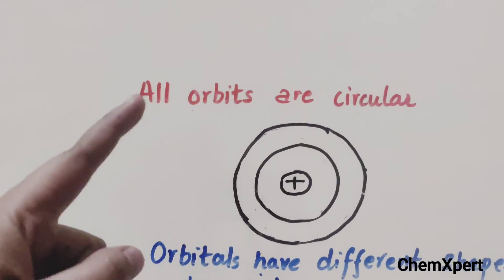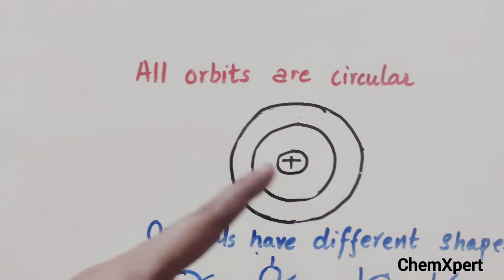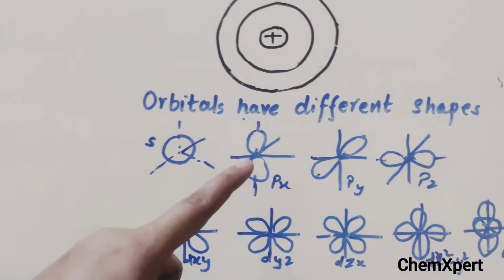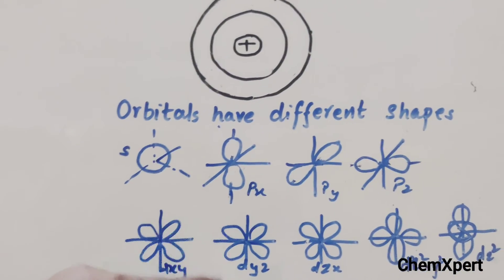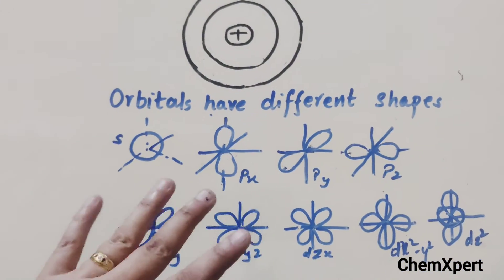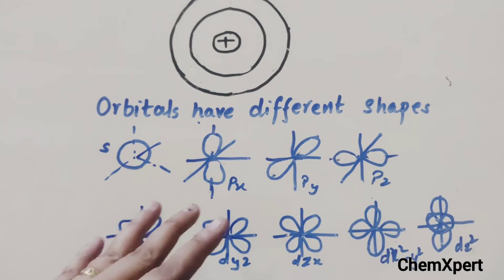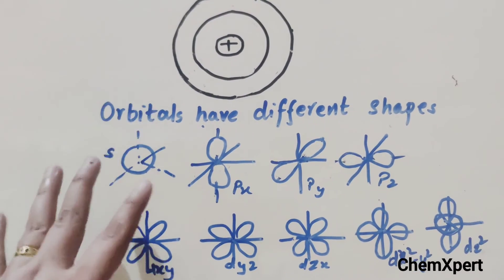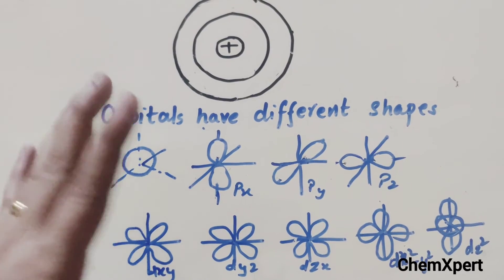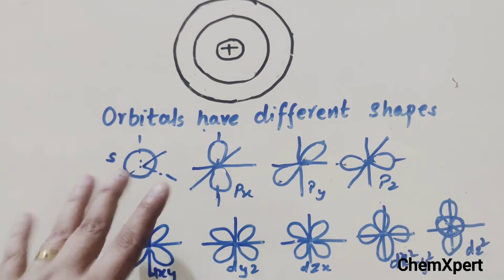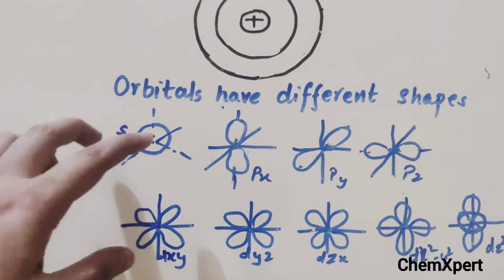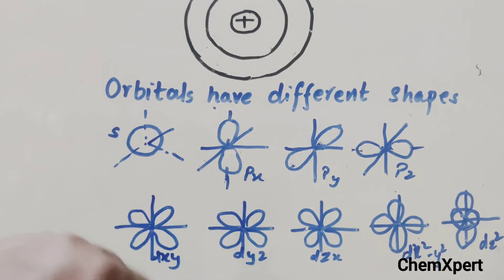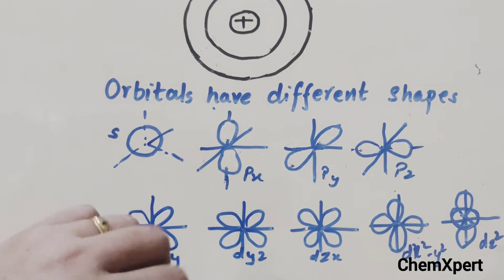Since orbits are circular, they do not have any directional property. But orbitals are directional — they are oriented along the axis, or in between the axis, or in between the plane. There is one exception: the s orbital does not have any direction, but all other orbitals are directional in nature.